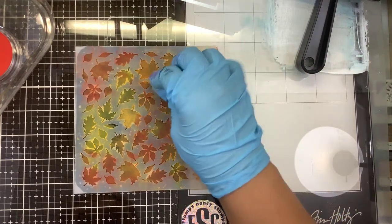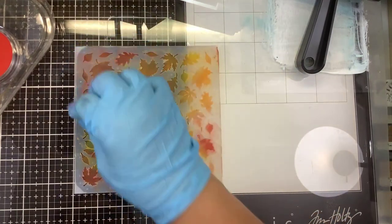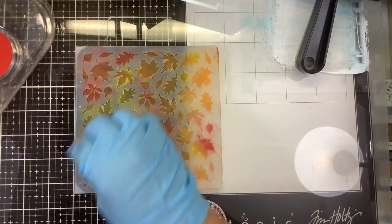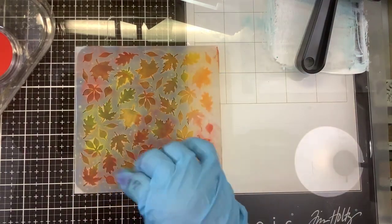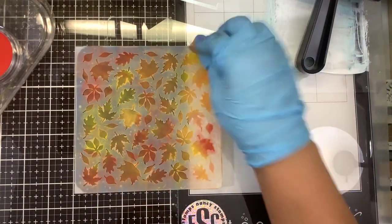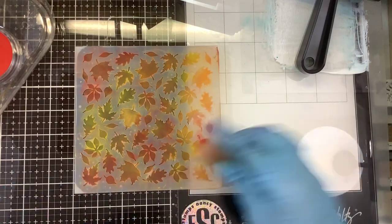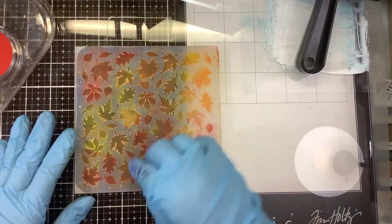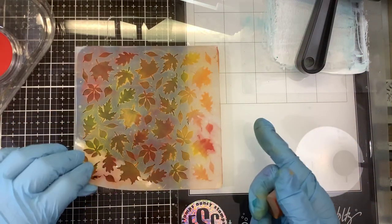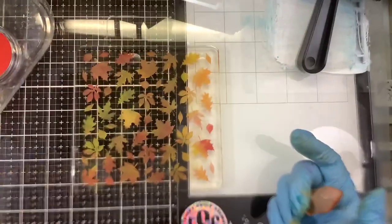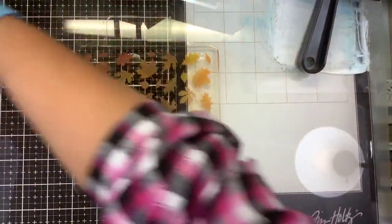Because the gel press is sticky, it just takes that pan pastel like no problem. Sometimes when we're using stencils with ink, the ink goes down underneath the stencil a little bit. Well, this is just sitting right where it's sticky. Once we have our stencil fully covered, we're going to lift it up. Oh, that's pretty already just like that.